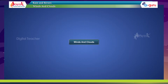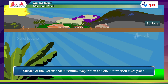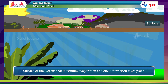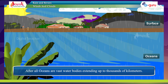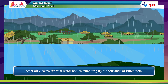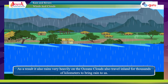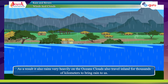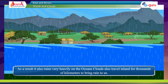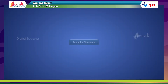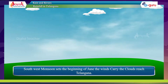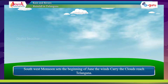Winds and clouds: the surface of the oceans is where maximum evaporation and cloud formation takes place. After all, oceans are vast water bodies extending up to thousands of kilometers. As a result, it also rains very heavily over the oceans. Clouds also travel inland for thousands of kilometers. In Telangana, the southwest monsoon sets in at the beginning of June, when the winds carry the clouds inland.